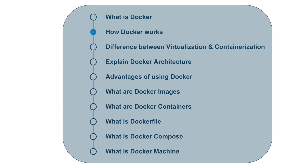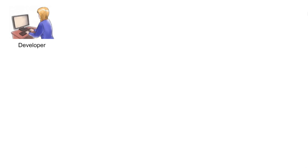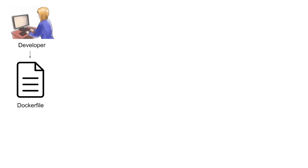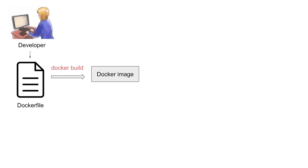Let us see how Docker works. If you are a developer using Docker, you will create a Dockerfile. A Dockerfile is a text file which has instructions to create a Docker image. A developer creates a Dockerfile, and we can build it using the Docker build command, which creates a Docker image. Then we can create a container from the Docker image using the Docker run command, which creates a Docker container that can be shipped to any platform.